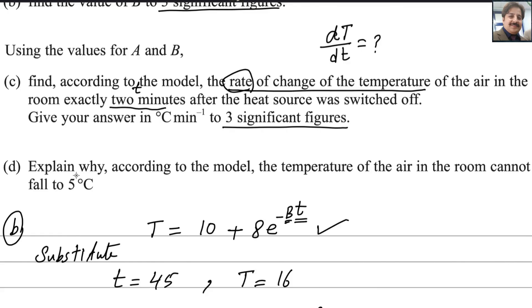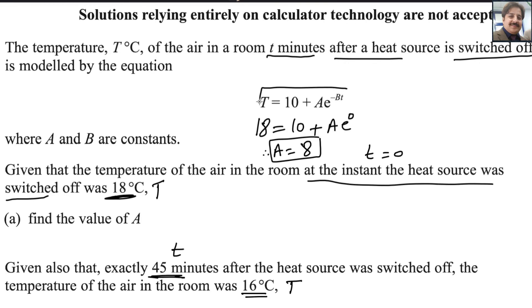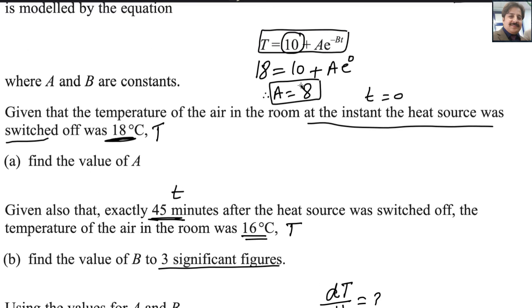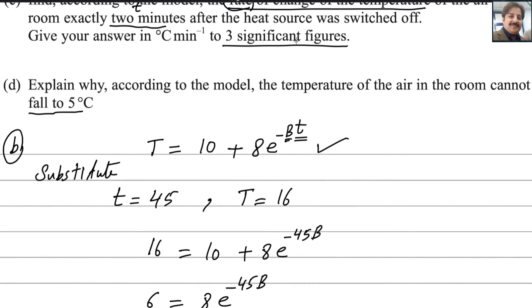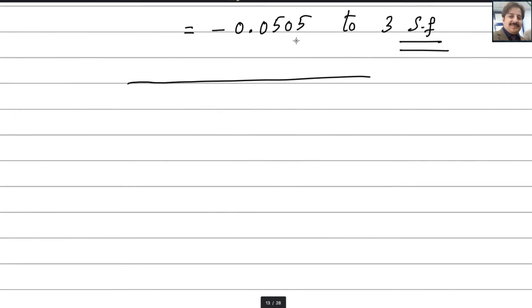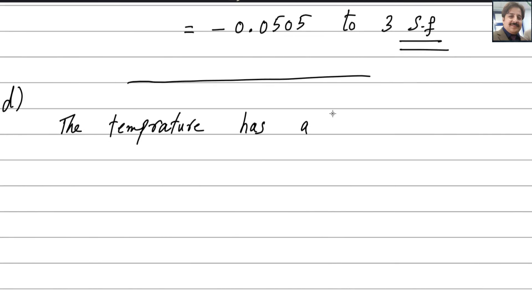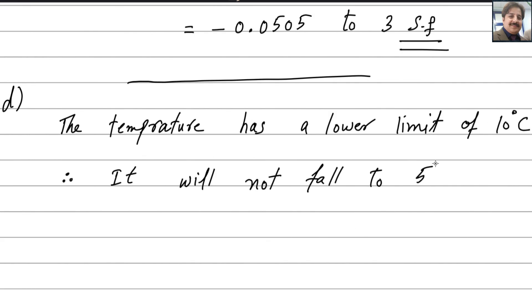For the last part: explain why, according to the model, the temperature of the air in the room cannot fall to 5 degrees Celsius. Looking at the equation, the exponential function cannot be 0 or less than 0. Therefore, the limiting value for the temperature is 10 degrees Celsius. We can write: the temperature has a lower limit of 10 degrees Celsius, therefore it will not fall to 5 degrees Celsius.